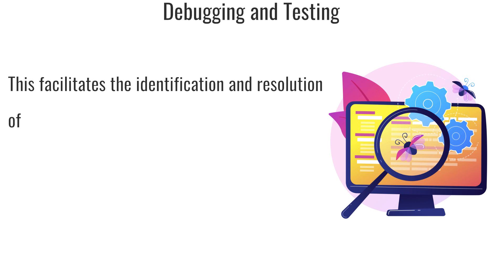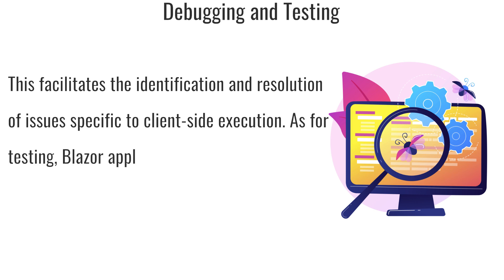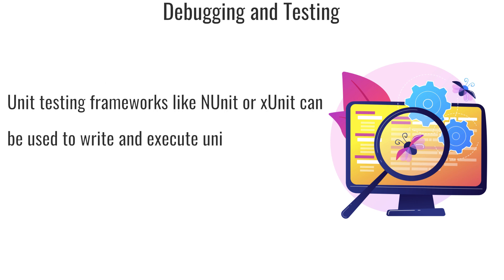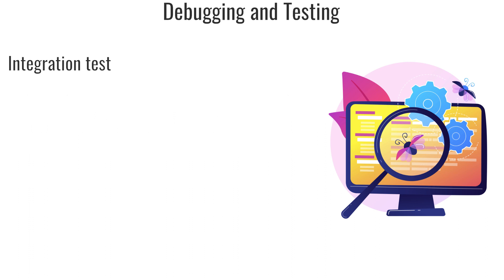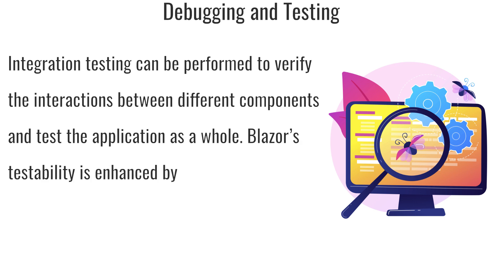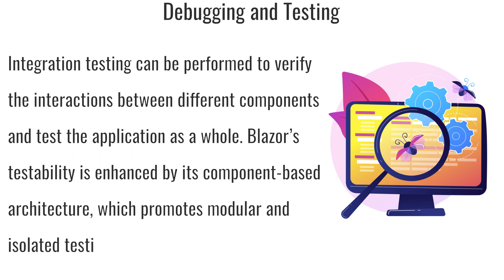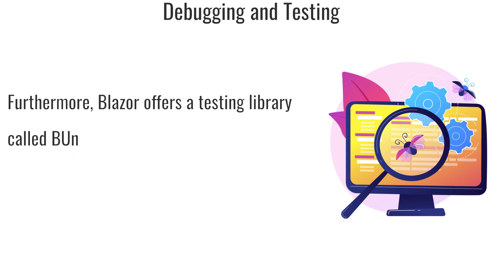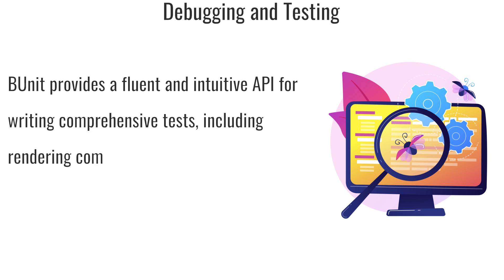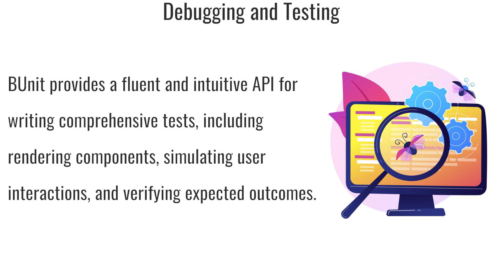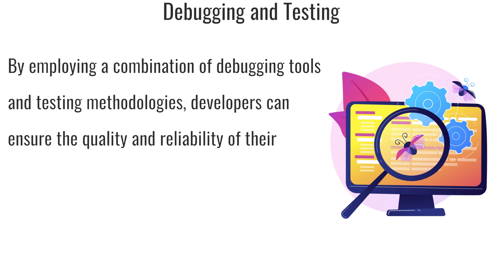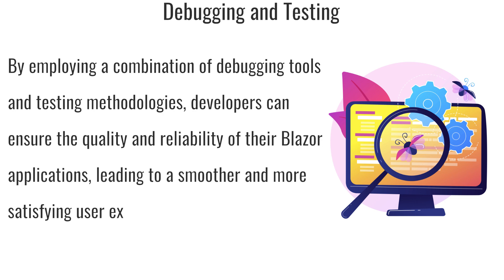For testing, Blazor applications can be tested using various approaches. Unit testing frameworks like NUnit or xUnit can be used to write and execute unit tests for individual components or services. Integration testing can verify the interactions between different components and test the application as a whole. Blazor also offers a testing library called BUNIT, specifically designed for testing Blazor components, which provides a fluent and intuitive API for writing comprehensive tests including rendering components, simulating user interactions, and verifying expected outcomes. By employing a combination of debugging tools and testing methodologies, developers can ensure the quality and reliability of their Blazor applications, leading to a smoother user experience.